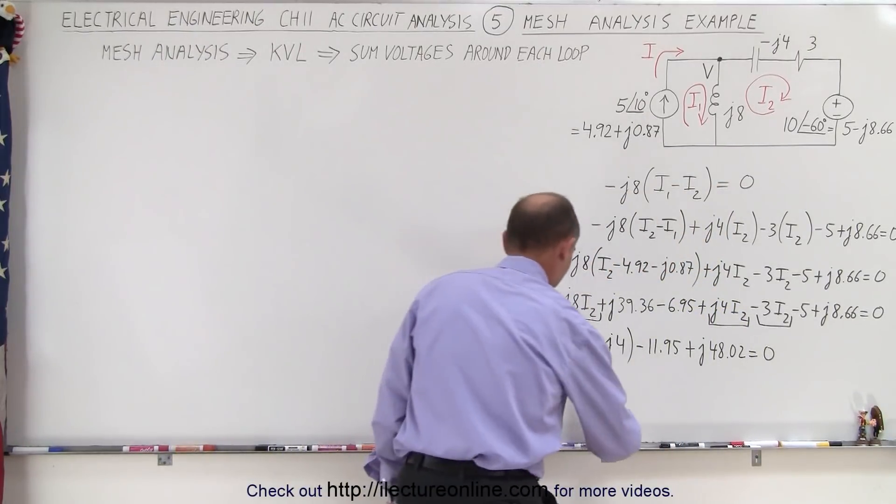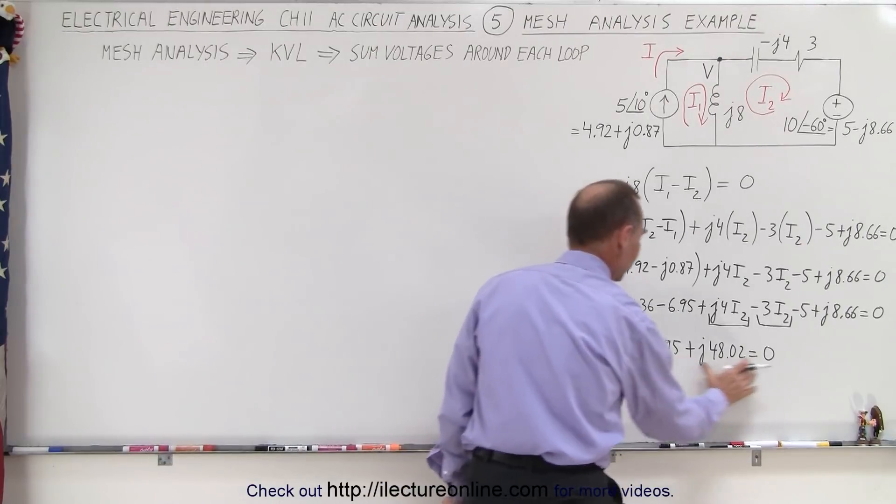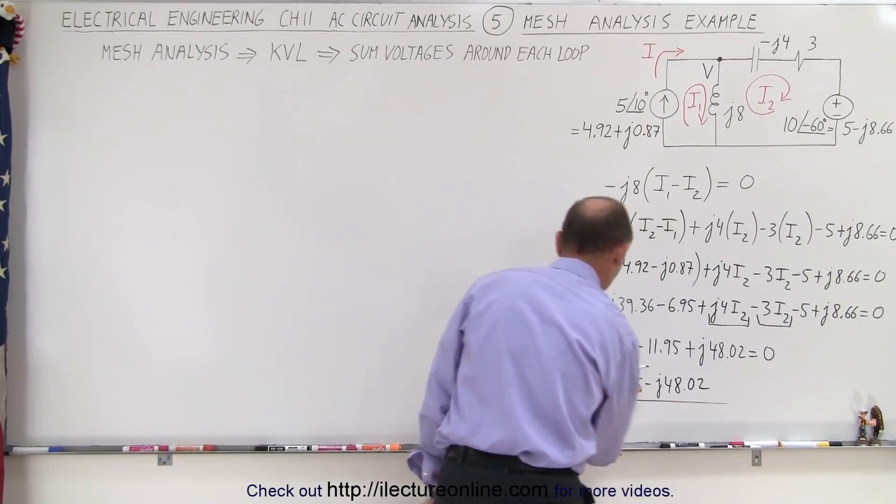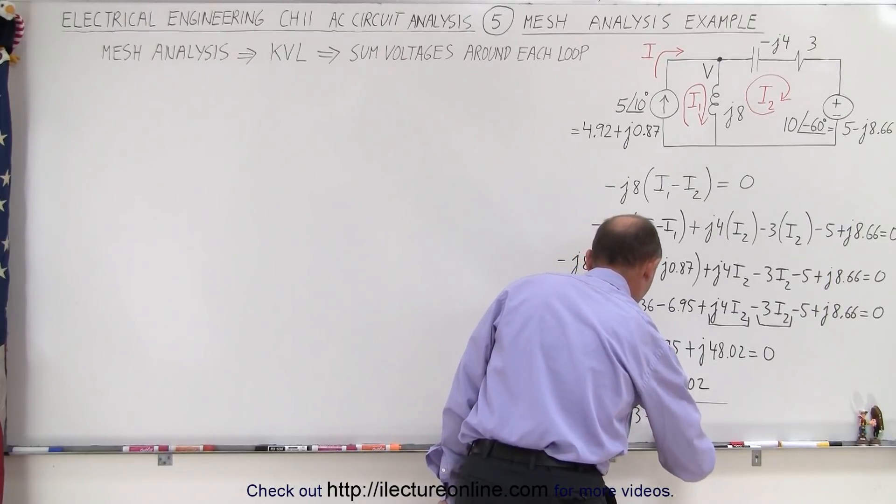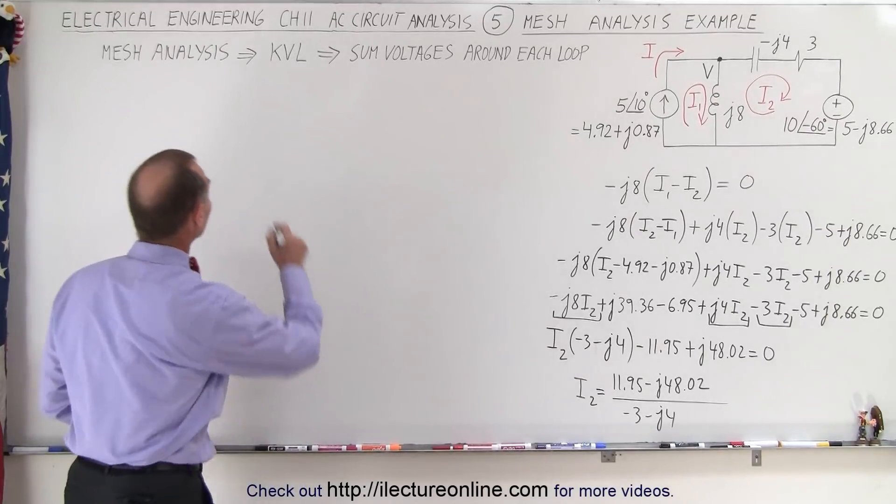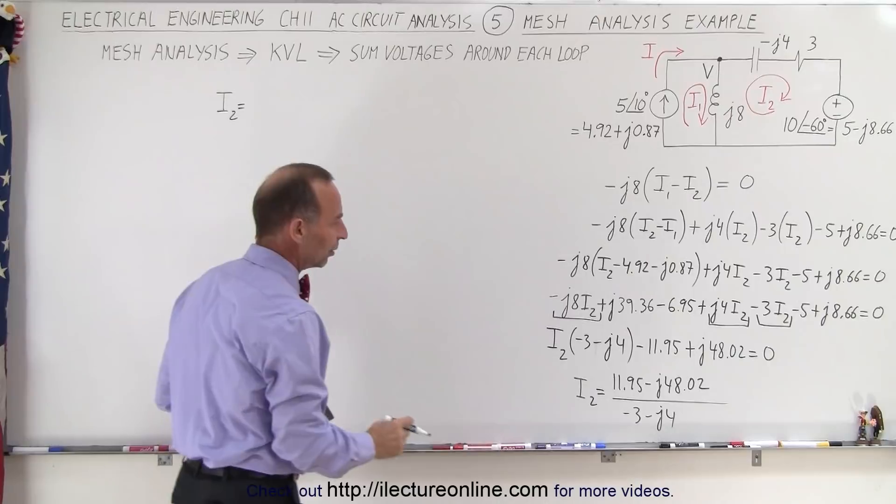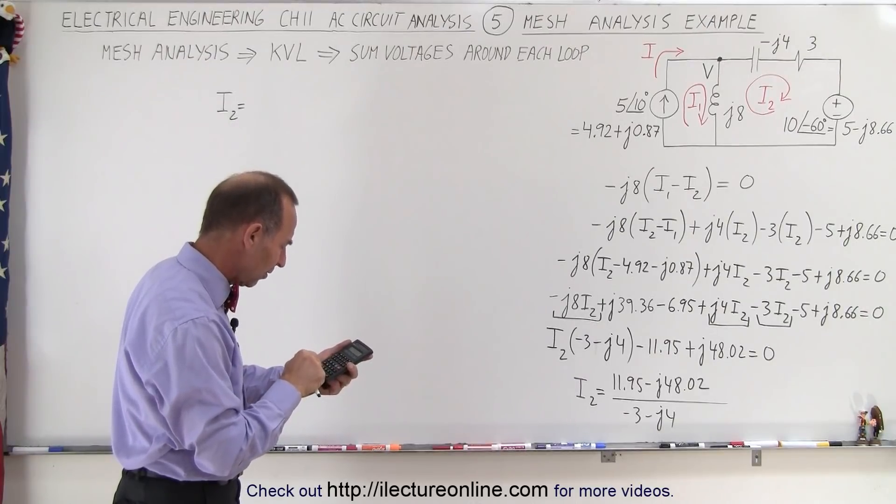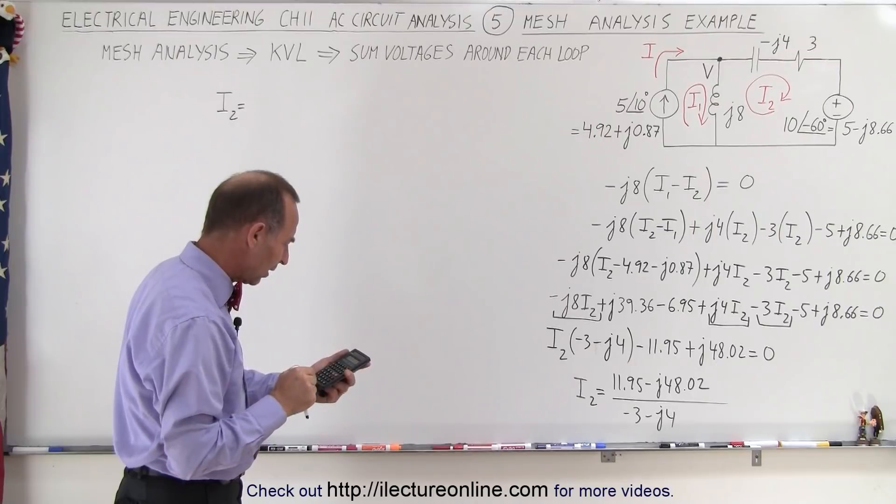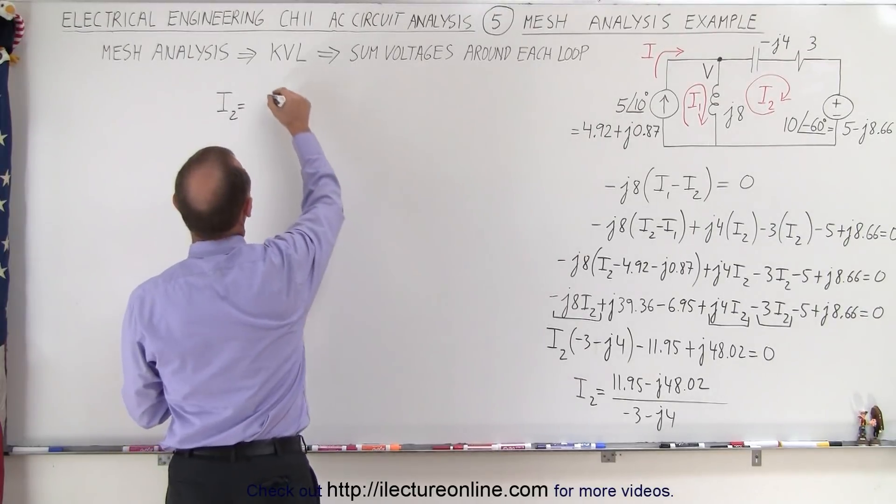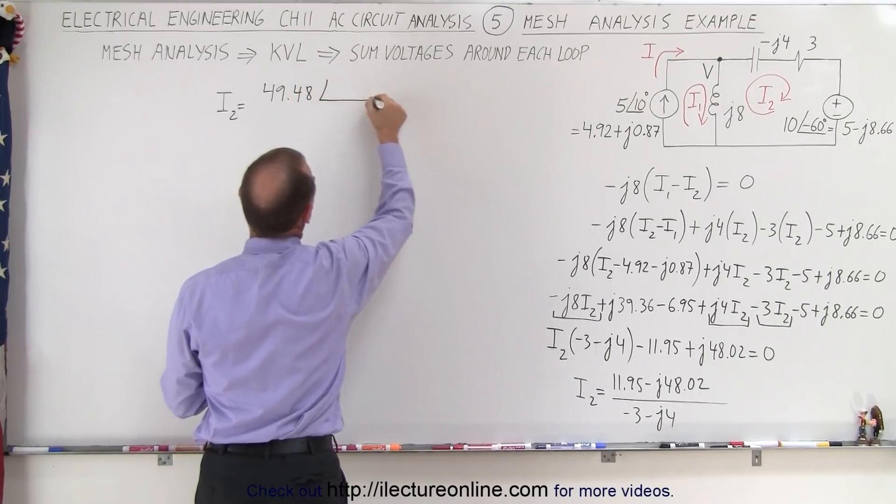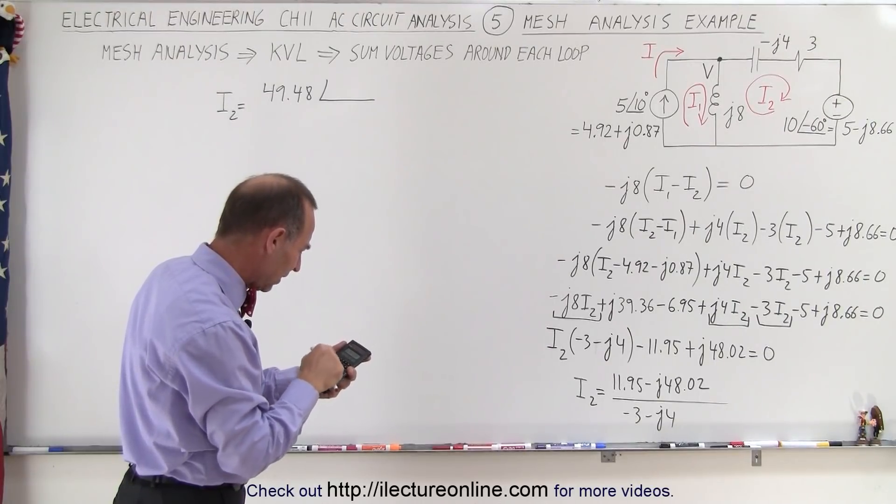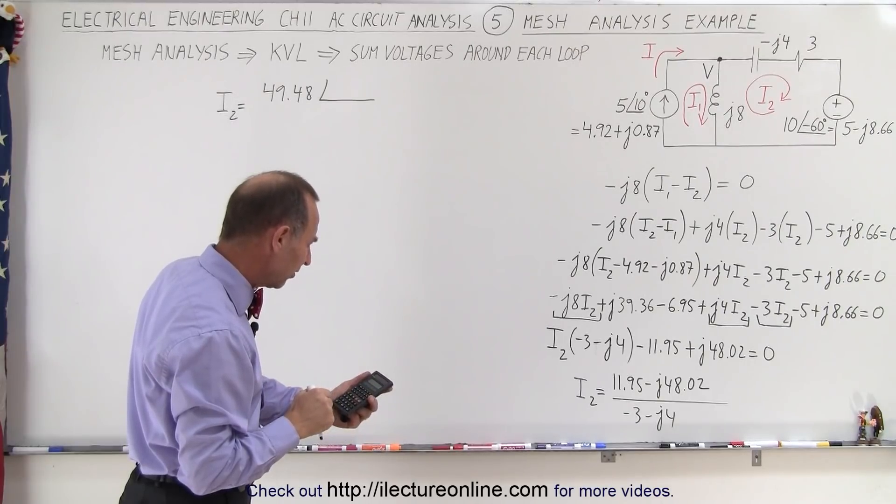Okay solving that for I2 now we have I2 is equal to bringing this to the other side it becomes a plus 11.95 minus J48.02 and we divide that by what's in the parentheses here which is a minus 3 minus J4. And that will give us I2 so let's go ahead and continue over here, I2 is equal to converting this to magnitude and phase angle 11.95 squared plus 48.02 squared. Take the square root that gives us 49.48.